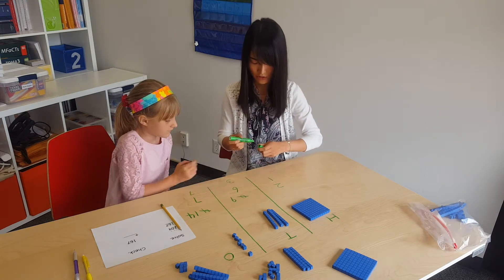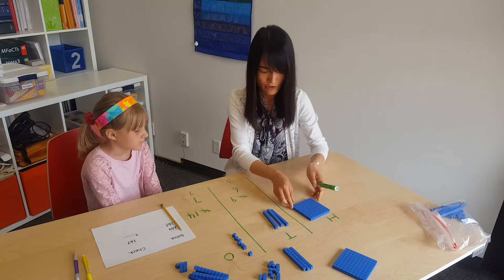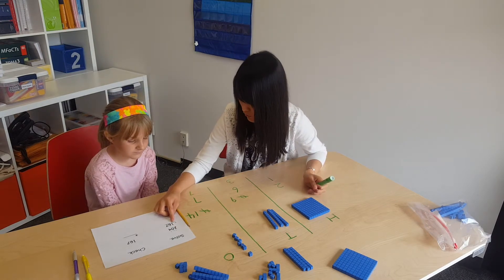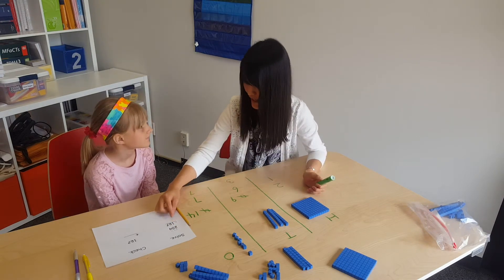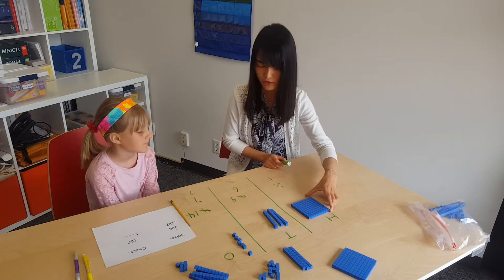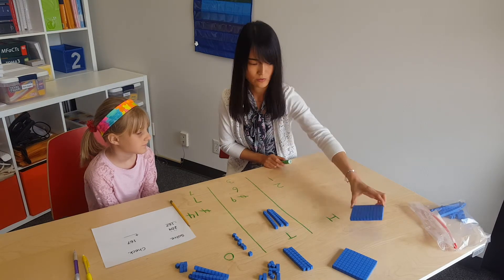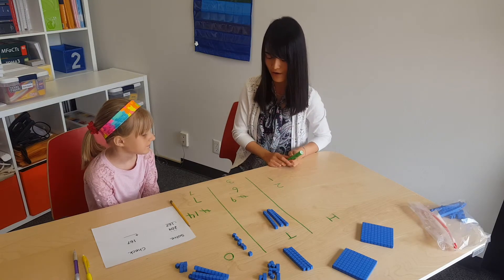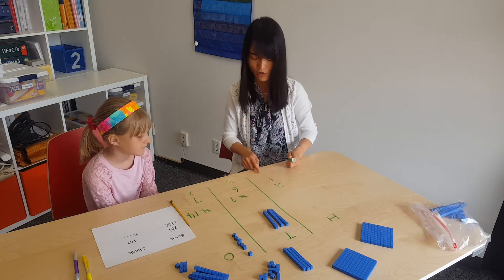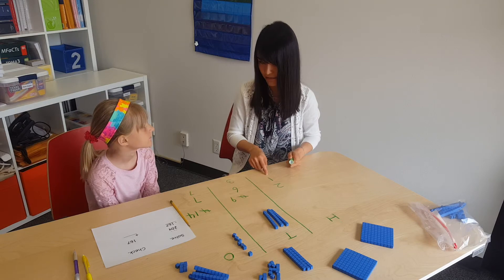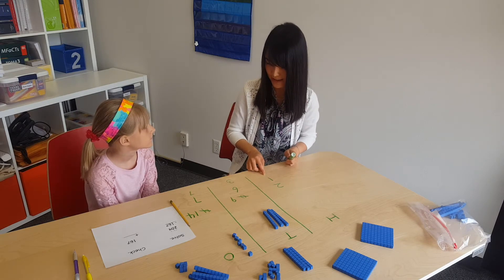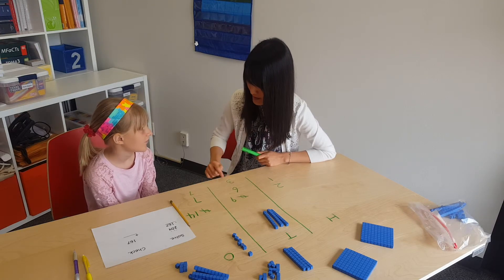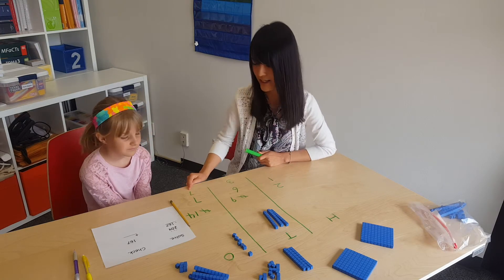Good. So we have one hundred here and we have to subtract one hundred, right? So what are we going to do? We're going to take away one hundred. How many are left? Zero. All right. We have zero left, but we don't need to write zero here. So our answer is 37. Good.